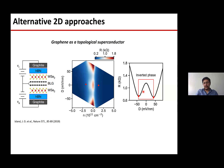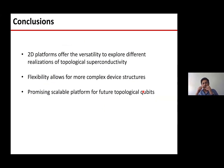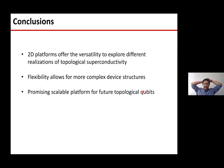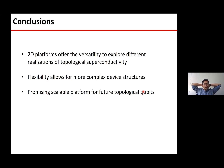Let me stop here. I hope I've put across the point that 2D platforms are extremely versatile for exploring different realizations of topological superconductivity. This is very crucial especially in this field because it's still an open question what is precisely the right way to approach the engineering of Majoranas and eventually topological qubits. 2D platforms are extremely flexible, offering the opportunity to make more complex device structures in the future and potentially a promising platform for scalable systems.